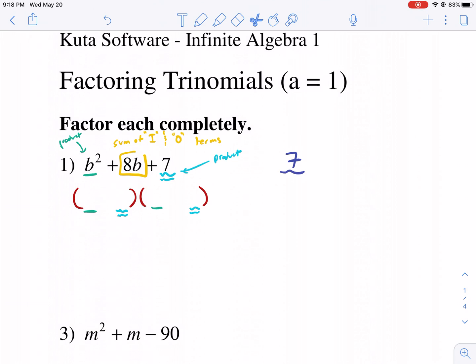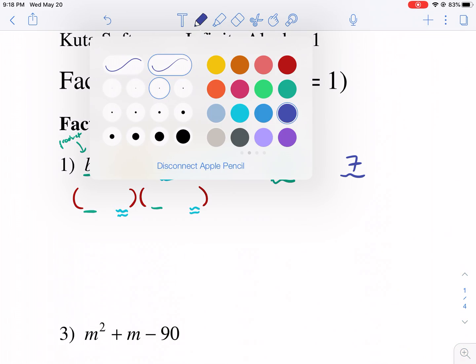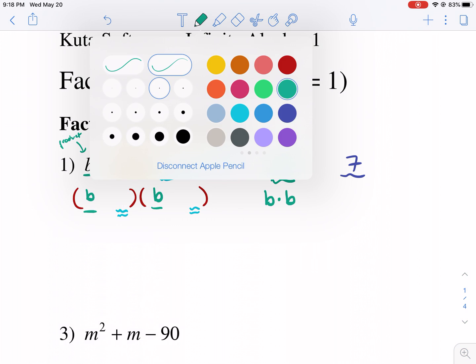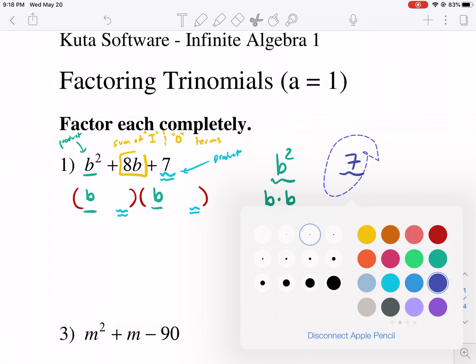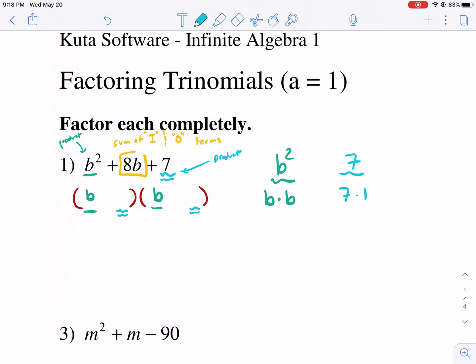So the first thing I always like to do is, and we won't do this in the future, but I just want to show you for the first step. We're going to think of the factors. We're going to look for the factors of b squared. What times what equals b squared? Well, that's clearly b times b. Those are the only two factors that give you b squared. So we're going to go ahead and write b and b in there. Now, what about 7? We're going to list all the factors of 7. So the only factors of 7 are 7 and 1. So that makes it a little easy for us. So we can go ahead and write 7 and 1 there too.